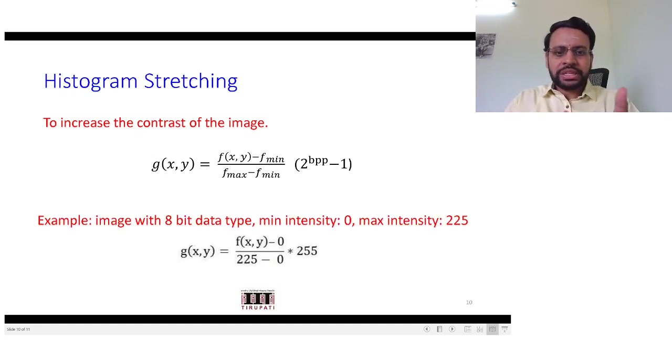A similar example here. Suppose an 8 bit data type, minimum intensity being 0, maximum intensity being 225. So what would happen now? f(x,y) minus—assume that already there are 0 intensities in your image, so this would remain f(x,y) in the numerator. And in the denominator, if the earlier image is just 225, this gets divided by 225, giving you, for the maximum when f(x,y) is maximum, this is going to be 1. And since you are multiplying it with 255, that gets mapped to 255.